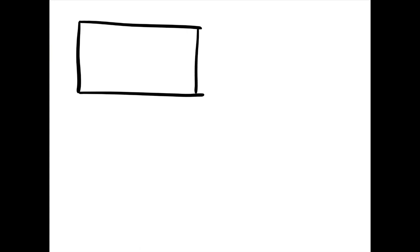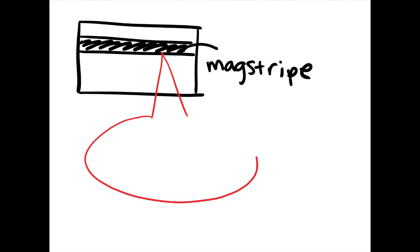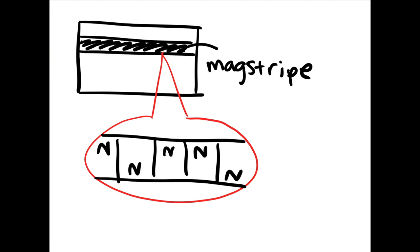On the back of a credit card, there's a black strip called a mag stripe. This is made up of ferromagnetic material that is laminated onto the card. Looking closer, there are tiny magnets, 20 millionths of an inch in size, which are all oriented in specific directions that carry personal information.